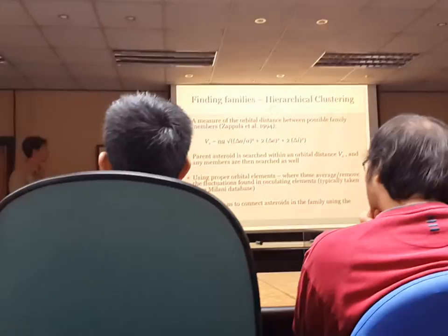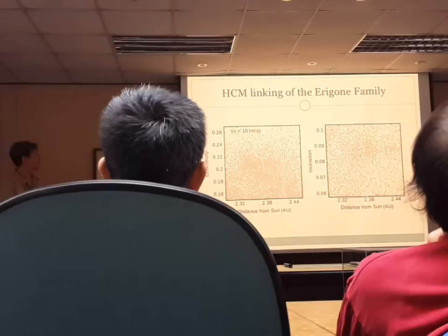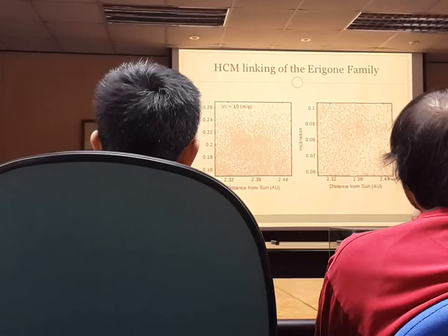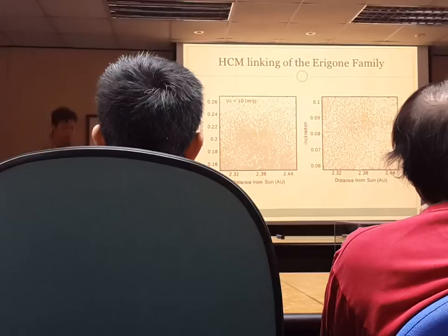Here's a little demonstration using the Aragoni family we looked at earlier. We're starting with the parent body Aragoni, using a clustering criteria of 10 meters per second, and we'll slowly increase this and watch as it continues to link more and more bodies in the area around it.